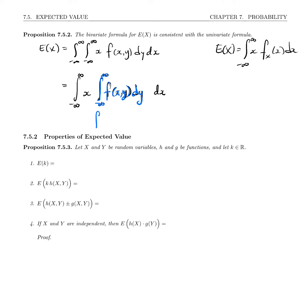That is exactly f sub x of x. And if we replace that inner integral by f sub x of x, then we indeed have the integral from minus infinity to infinity of x times that dx, which is the same thing as the univariate formula. It's exactly the same.